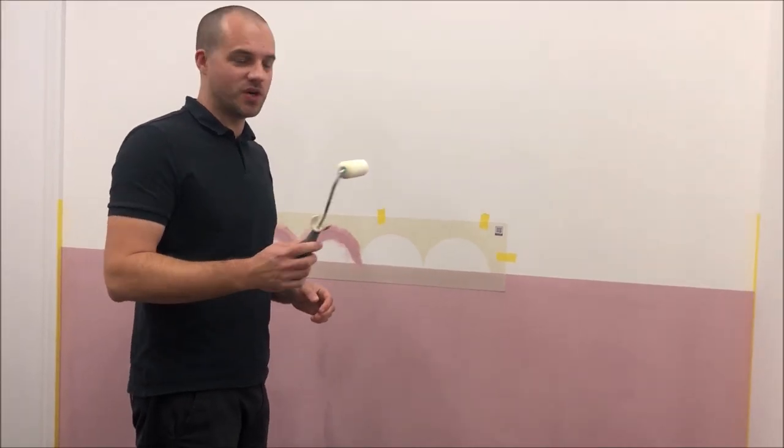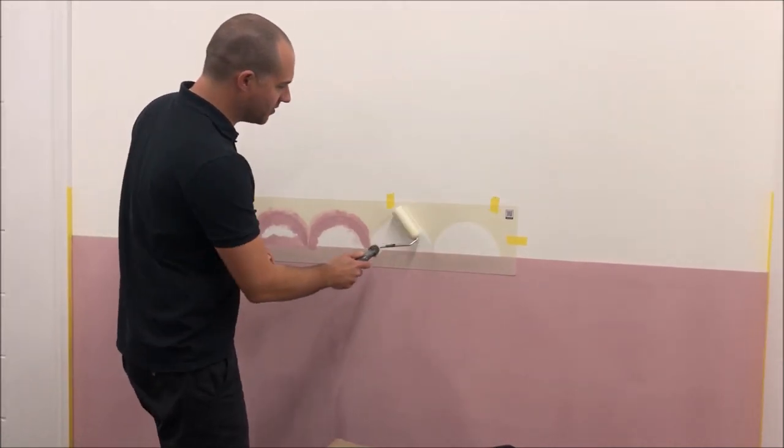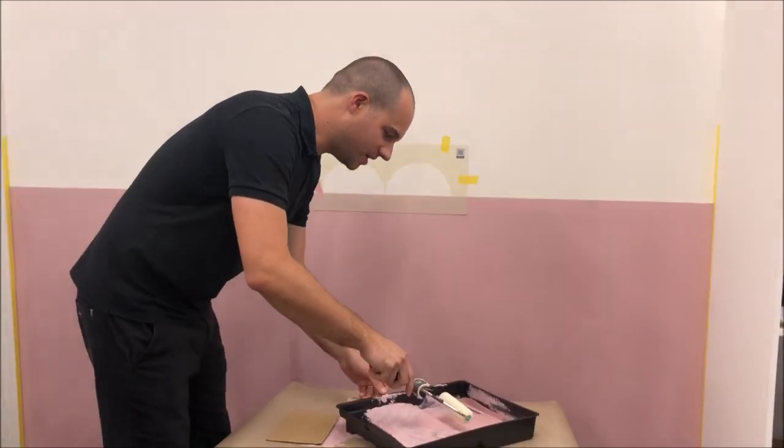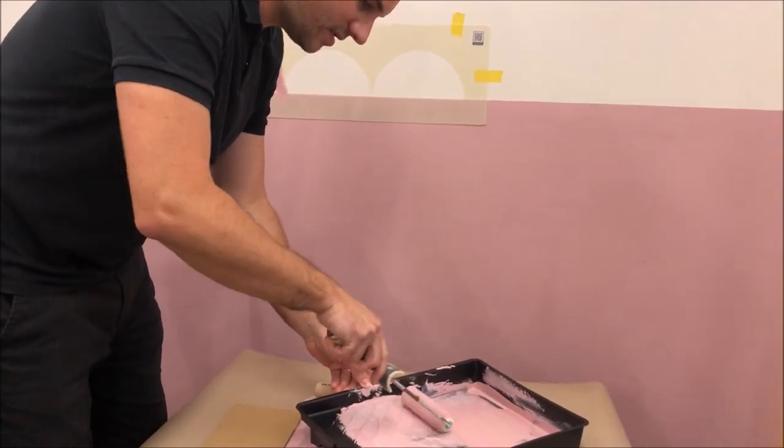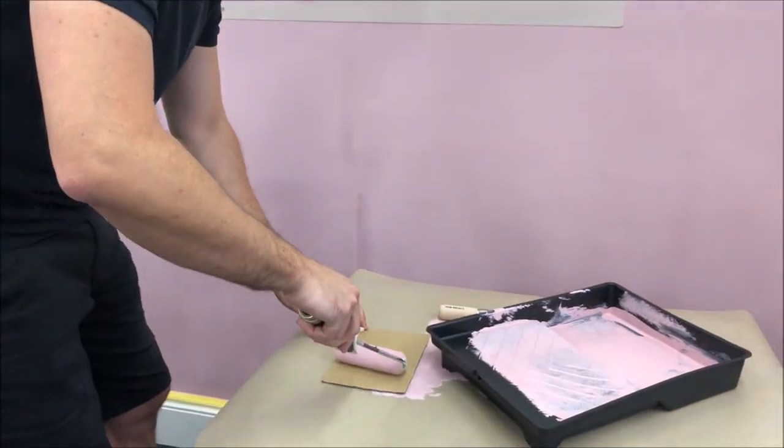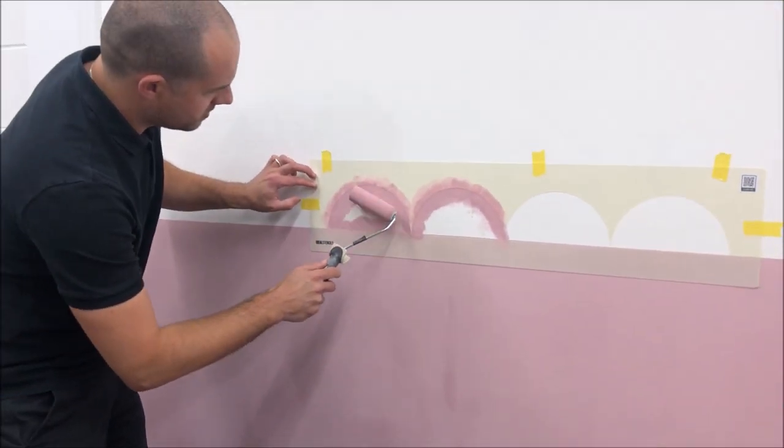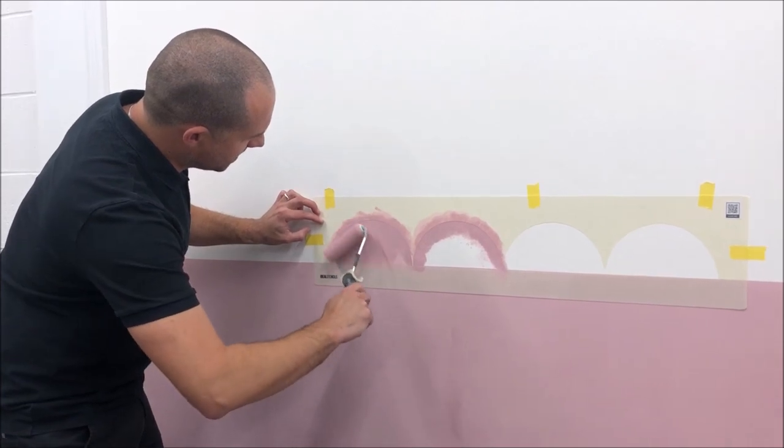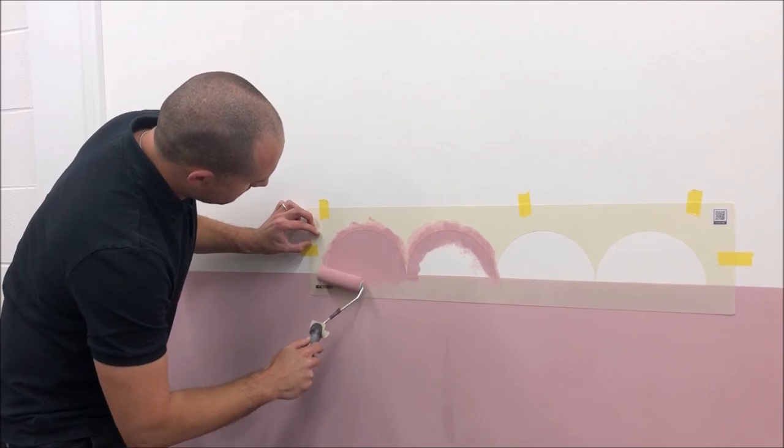Now I'm going to show you how to use the dense foam roller. We're going to fill in these shapes here with the dense foam roller, and then we'll do these two so you can see the difference. I'm loading the roller first with paint. Now I'm just going to wipe it off onto a bit of card, and then I'm going to roll, as I said, from the outside inwards like this into the shape where possible.